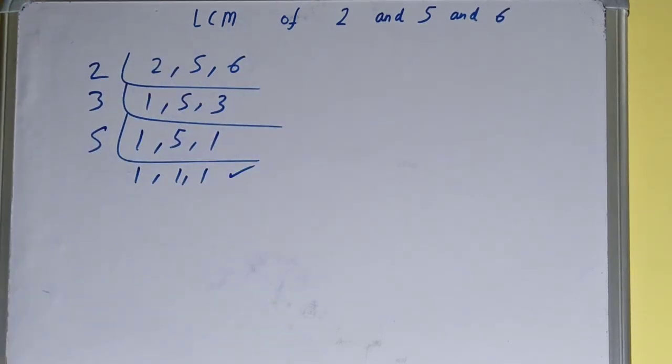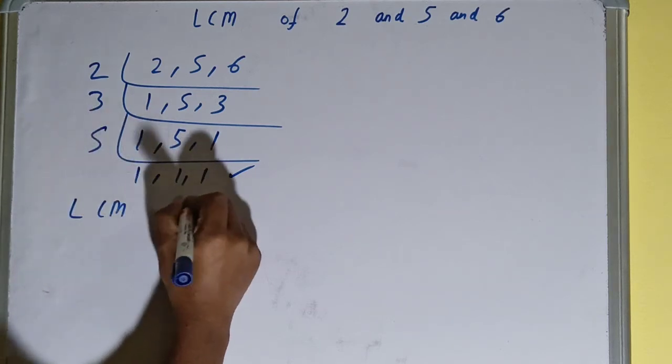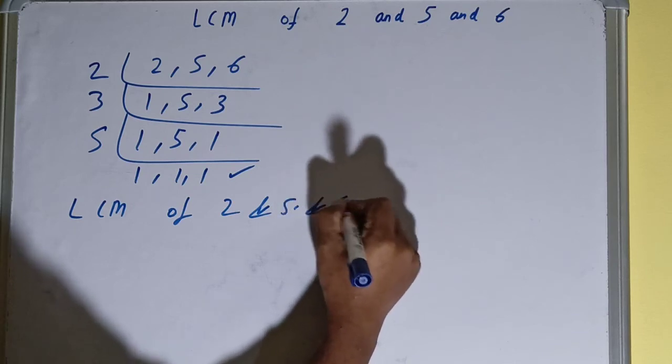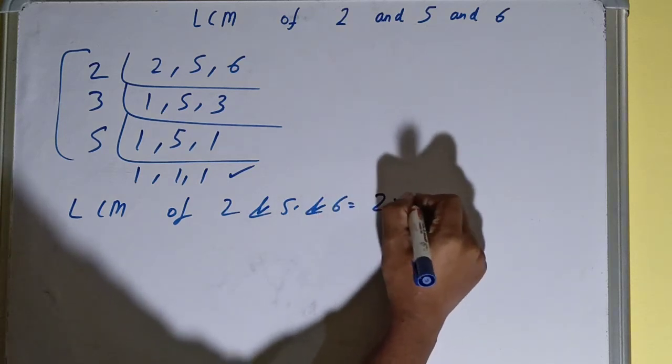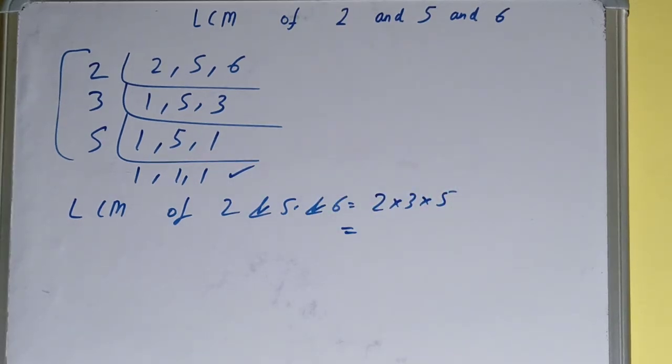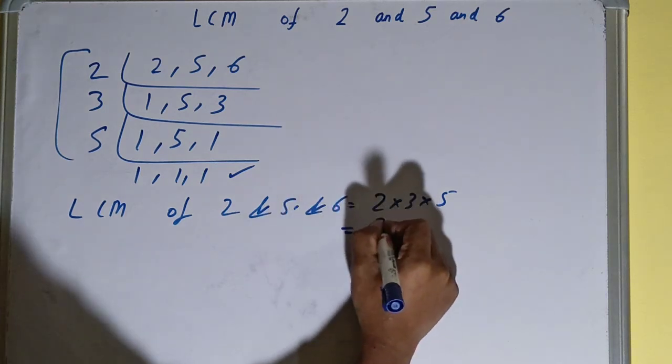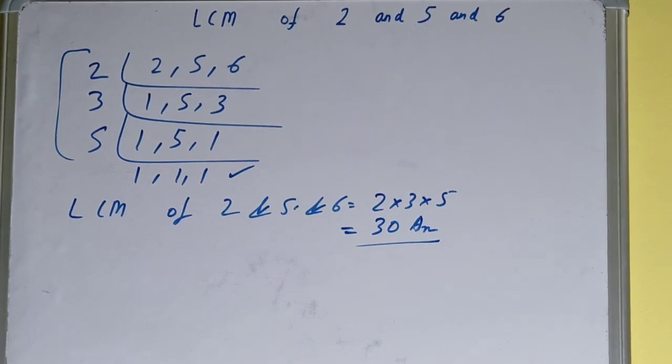And do one last thing: that is LCM of 2 and 5 and 6. Multiply whatever you have on the left hand side. That is 2 × 3 × 5. 2 3s are 6, 6 5s are 30. So our answer will be 30, or you can say our LCM will be 30.